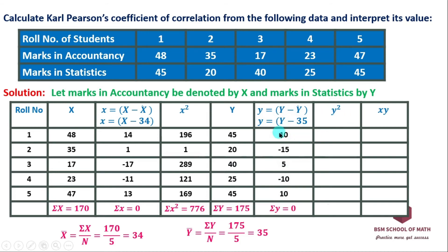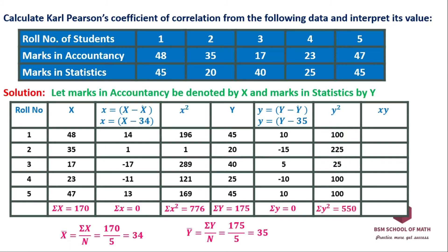Now we square each small y value. For instance, 15 squared is 225, and minus 15 squared is also 225, plus 20 and so on. We sum up all the y-squared values, and the summation of sigma small y-squared is equal to 550.